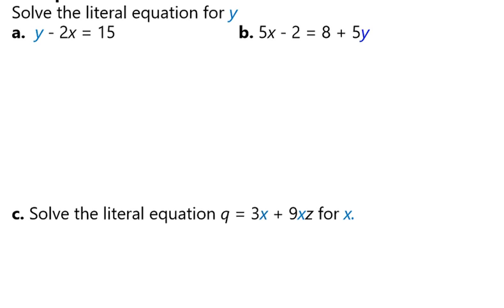So our first example says y minus 2x equals 15. Again, we're trying to get our y by itself. So we move our 2x, we'll add 2x to both sides, doing that inverse operation. That cancels those x's out, so we have y equals.